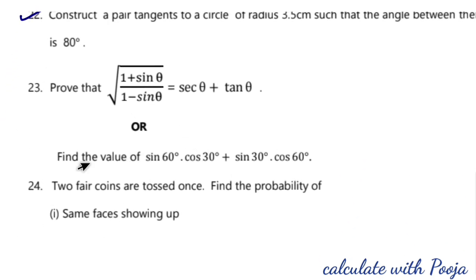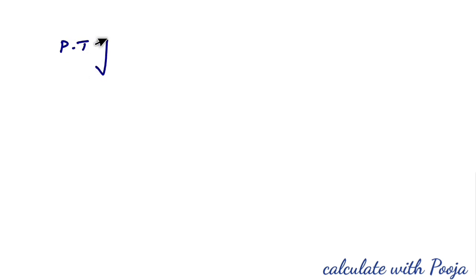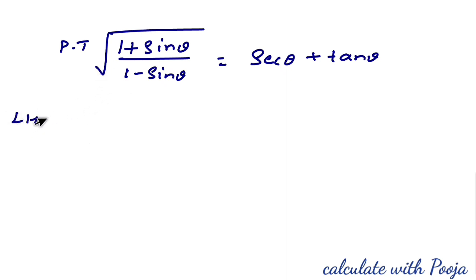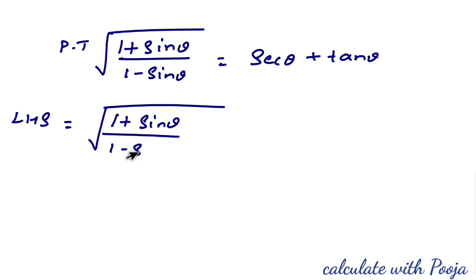Next, question 23: prove that √((1 + sinθ)/(1 − sinθ)) = secθ + tanθ. To prove this, we consider the LHS: √((1 + sinθ)/(1 − sinθ)).